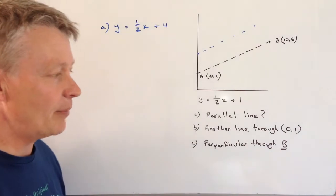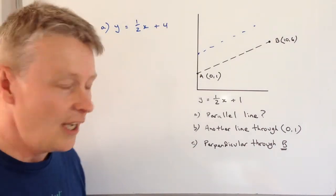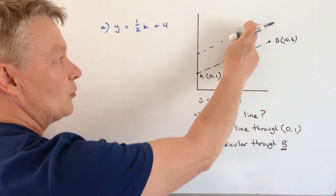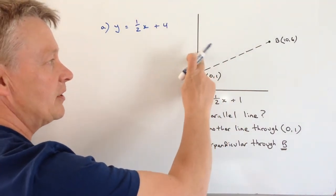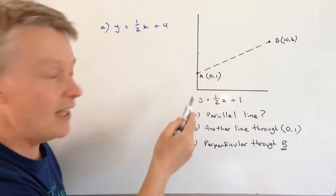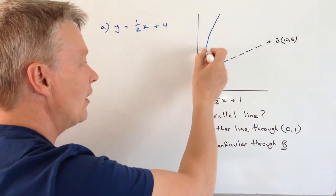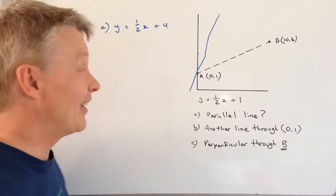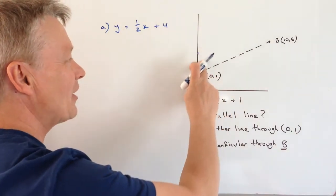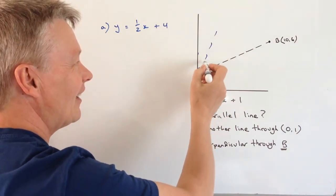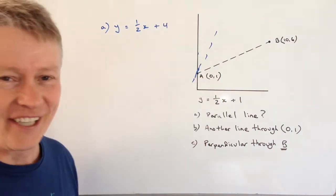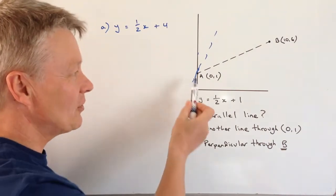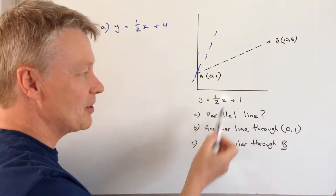Next one is another line that passes through zero one. Well this is the opposite really, this is all about this bit here and what we're saying is the gradient might change but it goes through this point here. So it could be a line that looks something like that, hopefully a little bit straighter than the way I've drawn it on the board but hopefully you'll get the idea. So it might be that this has got say a gradient of four but it crosses through exactly the same point which is the plus one.